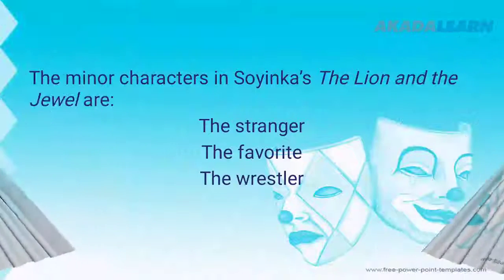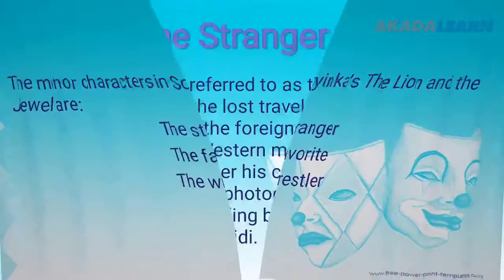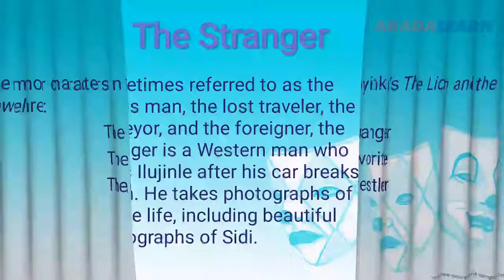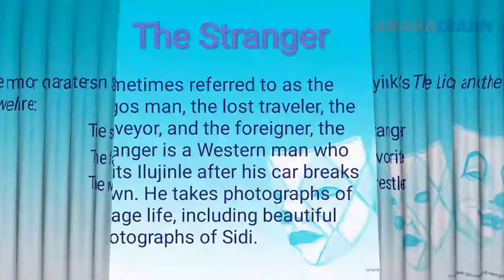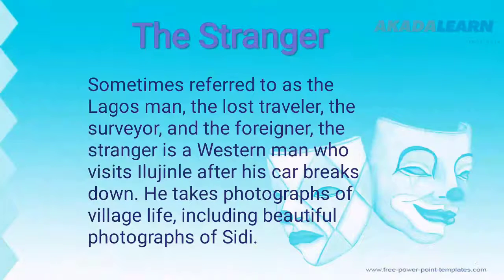Now, who are the minor characters in the play? We have the Stranger, the Favorite, and the Wrestler. These are the three minor characters in the play The Lion and the Jewel. The Stranger, sometimes referred to as the Lagos man, is the lost traveler, the surveyor, and the foreigner.